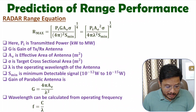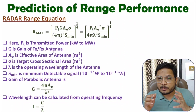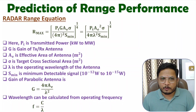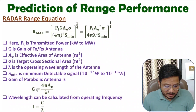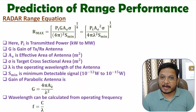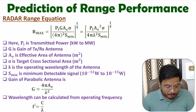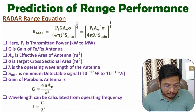G is the gain of the transceiver antenna. Usually with a radar system, we use a parabolic dish antenna. The gain of a parabolic dish antenna can be calculated using the equation G = 4πAe / λ², where Ae is the effective area of the parabolic dish antenna and λ is the wavelength. If the operating frequency is given, wavelength can be calculated as λ = C / F.